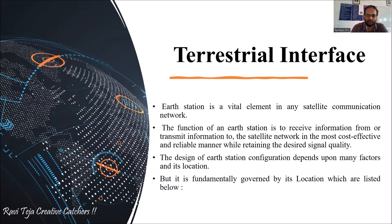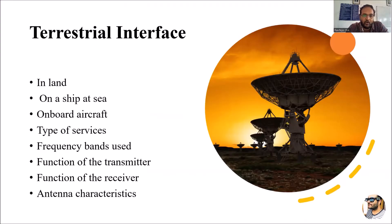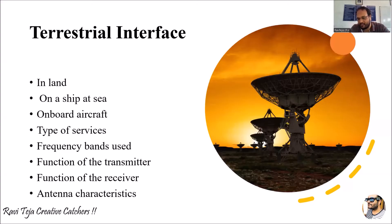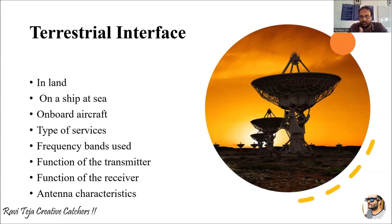The earth station is fundamentally governed by its location. It can be on land, it can be located on a ship at sea, or it can be onboard an aircraft. It can provide several types of services such as DTH or telecommunication services. Signal quality also depends on the types of frequency bands used, and the function of the transmitter and receiver plays a major role, along with the antenna characteristics.